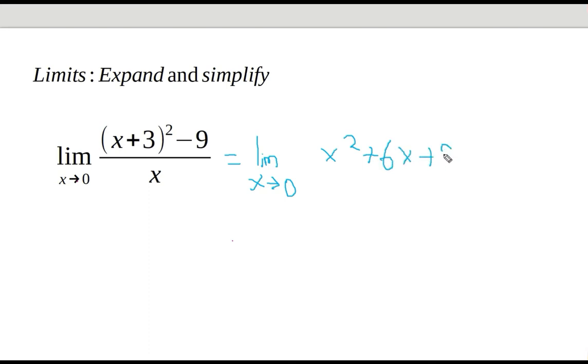That expands this function here, and then we have minus 9 divided by x. So 9 minus 9 is zero, so we are now left with the limit of x approaching zero: x squared plus 6x divided by x.